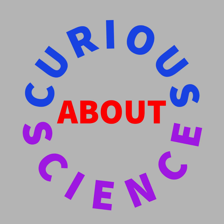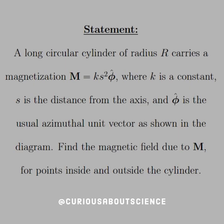Back again with some more magnetization fun. We have a long cylinder of radius R carrying a magnetization M = KS²φ̂, where K is a constant, S is the distance from the axis, and φ̂ is the usual azimuthal unit vector as shown in the diagram. We want to find the magnetic field due to M for points inside and outside the cylinder. Pretty similar to the last question, except now our magnetization is different and non-uniform.